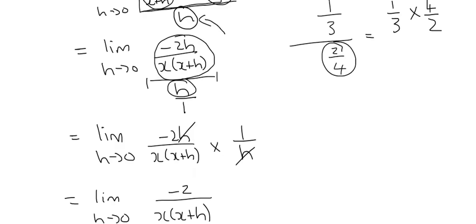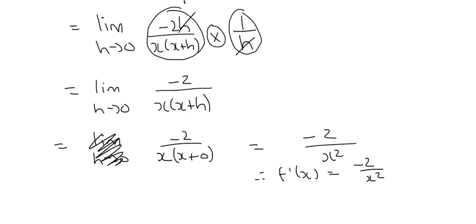Then we had a fraction on top of a fraction, so we used the rule: keep the top fraction the same, multiply, and flip the bottom fraction. The h's cancelled, which is good because then you can let h go to 0 without getting an error in the denominator.